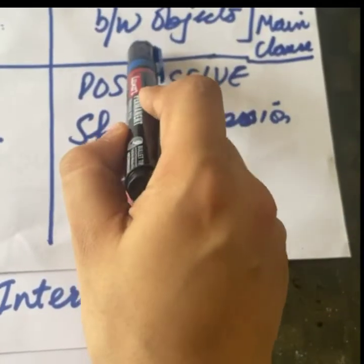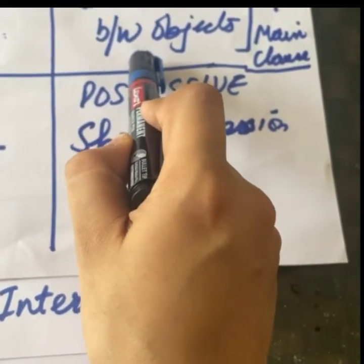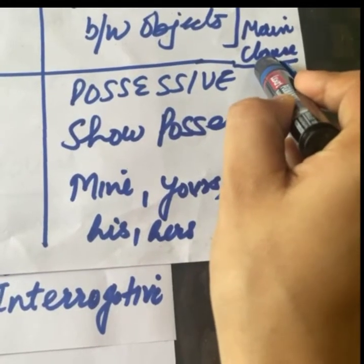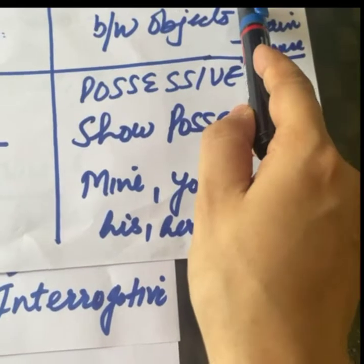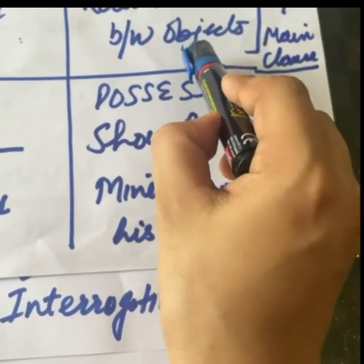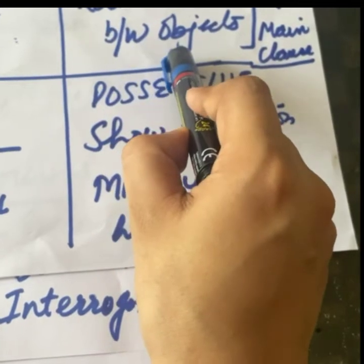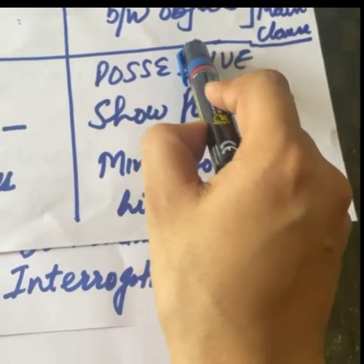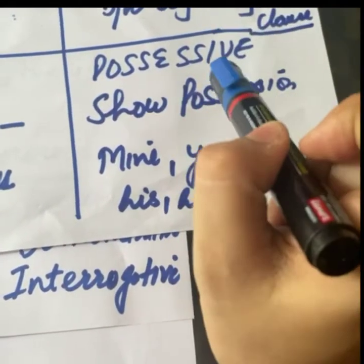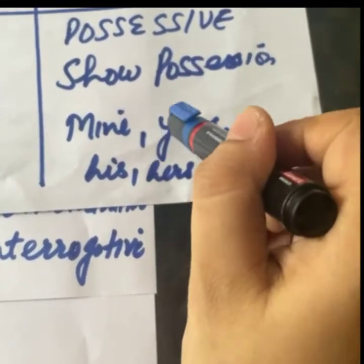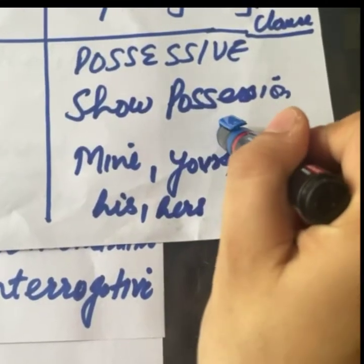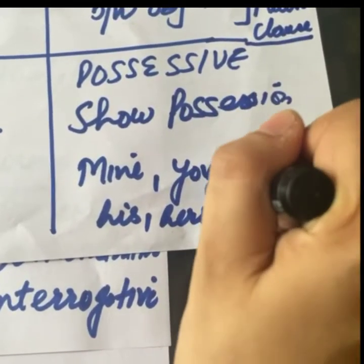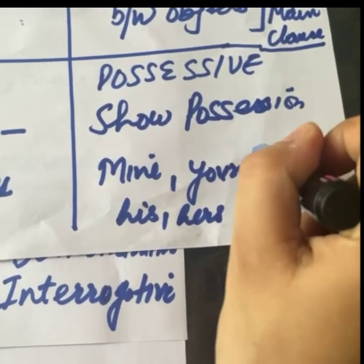Relative pronouns relation between objects ya sentences ke baare mein bataate hain. Phir aate hain possessive pronouns, jo ownership show karte hain — jaise mine, yours, his. For example: 'The pencil box is mine, the notebook is yours.'